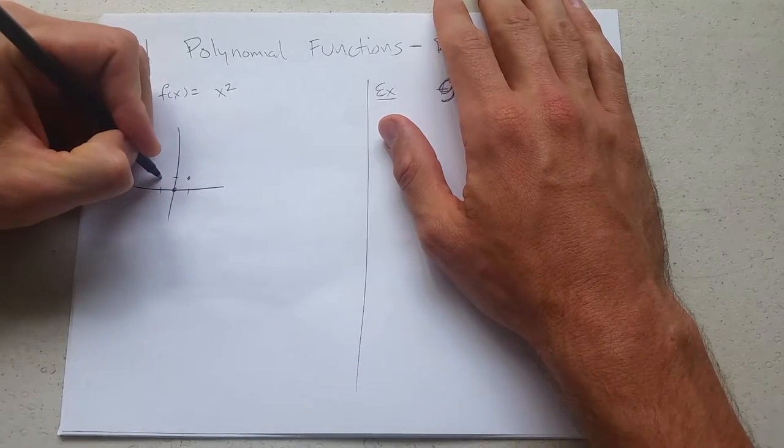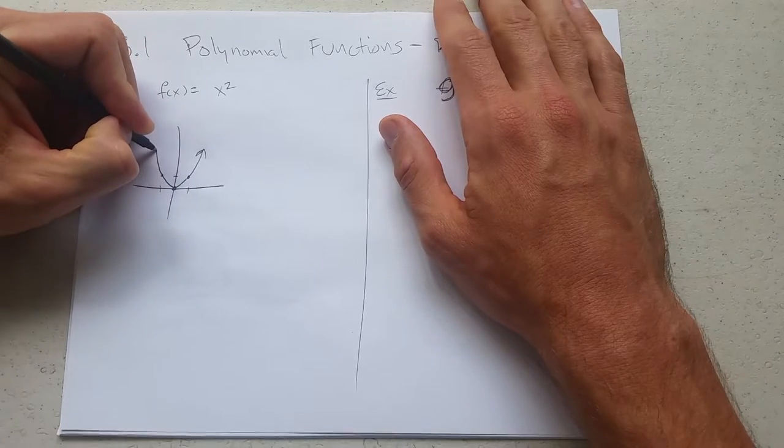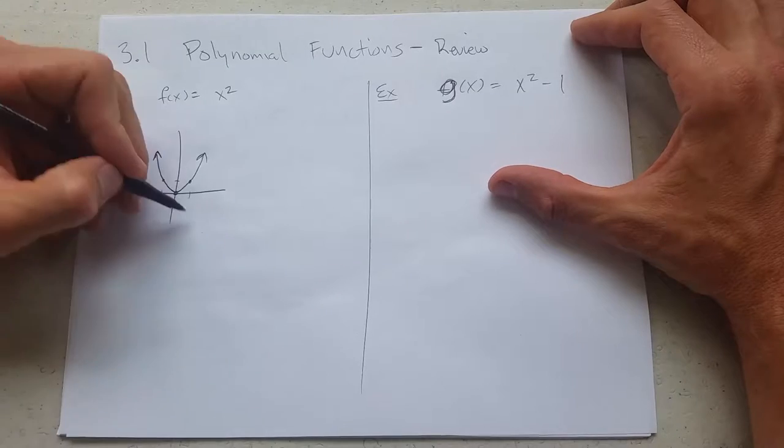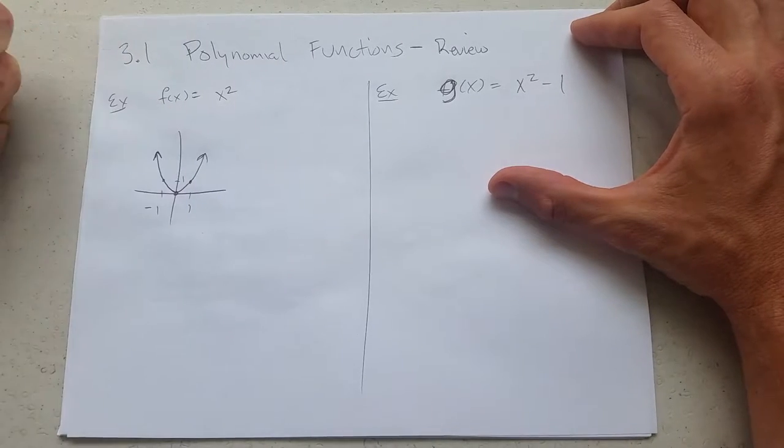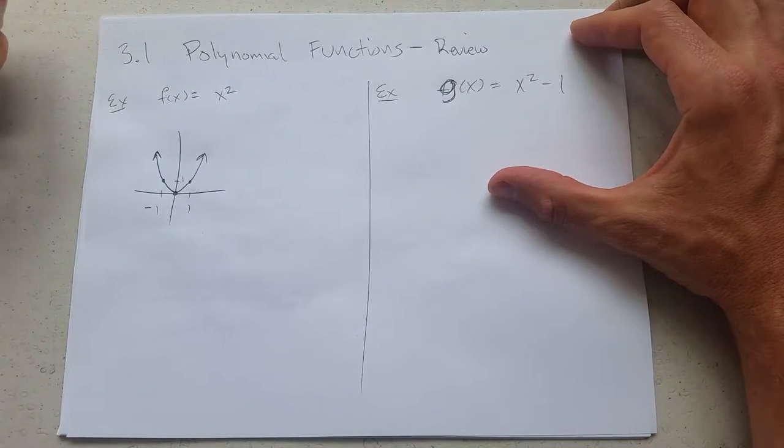Just going to put three points in real quick. You can of course make a table of values, and that's what the function looks like. Of course that's 1, negative 1, 1 on the y-axis. You have an x-intercept right here at 0, 0, and it's also a y-intercept.